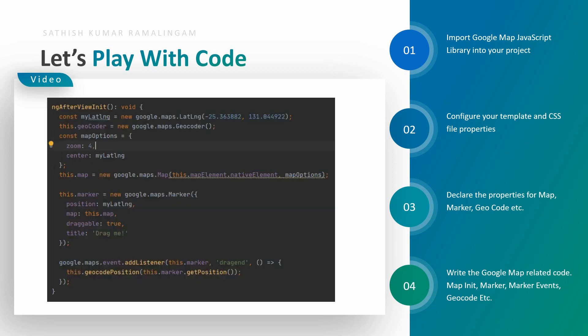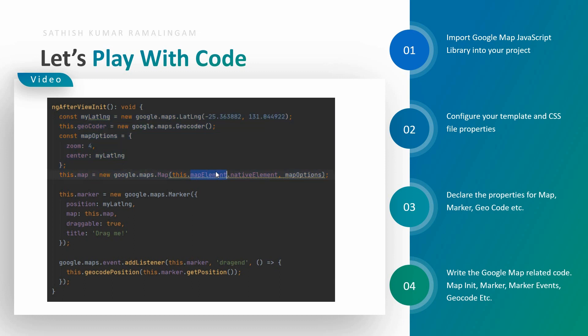Inside the function, I am going to create the map code. This is the code to initialize your Google Map inside your Ionic application. Here I am going to declare the map element and also the map options, which creates a new Google Map inside our Ionic application.